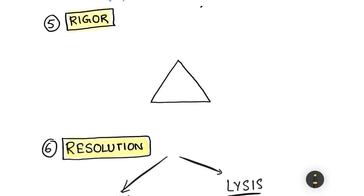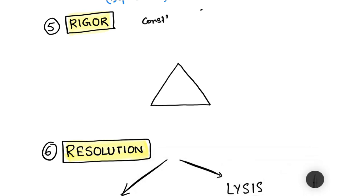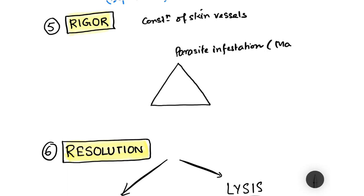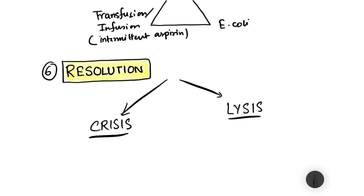Rigor is the shivering that accompanies fever, due to constriction of skin vessels. There are mainly three causes of rigor: parasitic infestation such as malaria, bacterial infection such as E. coli, and blood transfusion or drug infusion — for example, intermittent infusion of antipyretics like aspirin can cause rigor. If you see rigor, you should think along these three lines.